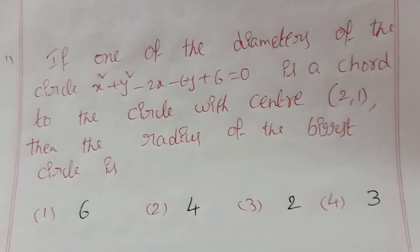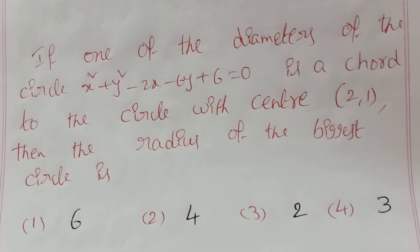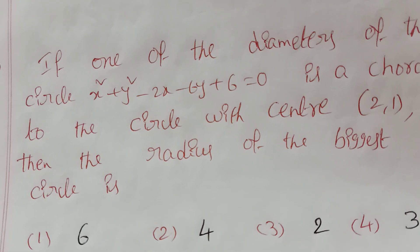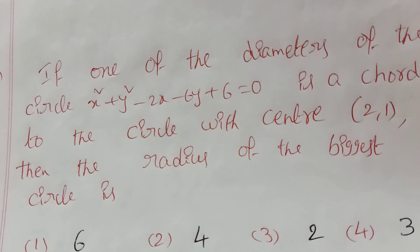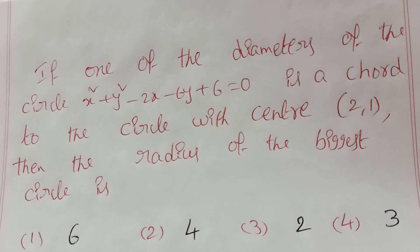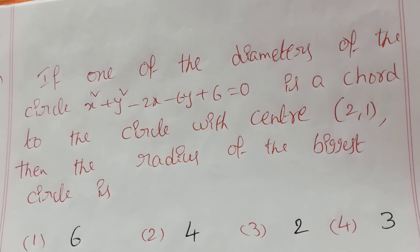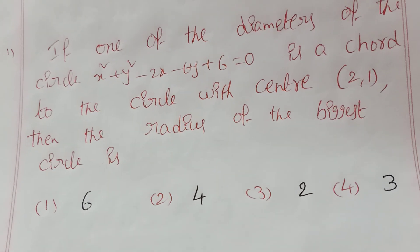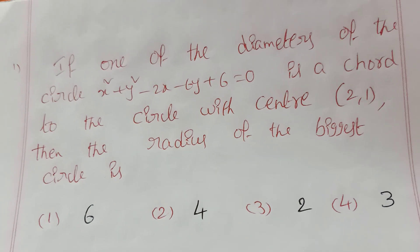The question is: if one of the diameters of the circle x² + y² − 2x − 6y + 6 = 0 is a chord of the circle with center (2, 1), then the radius of the biggest circle is asked. Options given are 6, 4, 2, and 3.